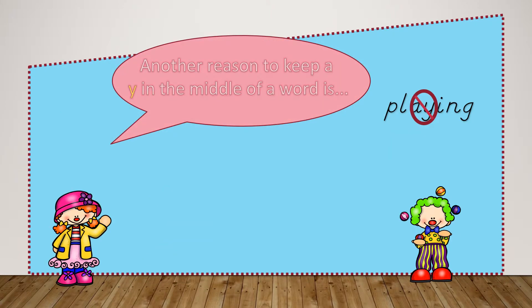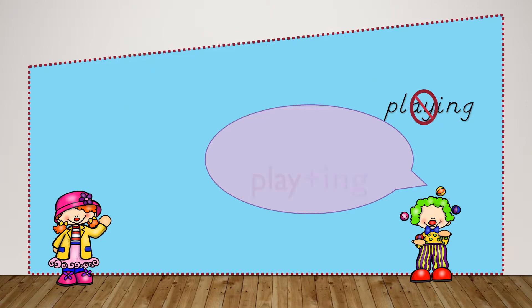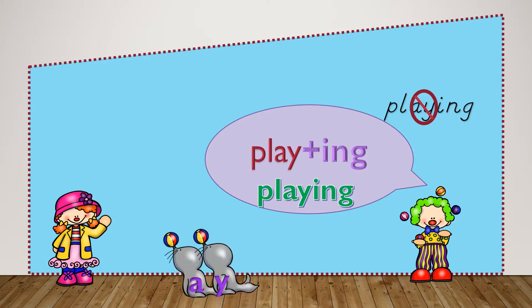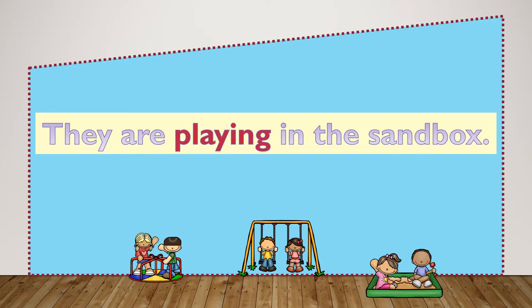Another reason to keep a Y in the middle of a word is that vowel teams in a word must stay together. We cannot separate a vowel team. So in the word playing, we have play plus -ing, but I cannot separate that vowel team. They must stay together, so I will leave the Y there and just add my suffix. Playing. They are playing in the sandbox.